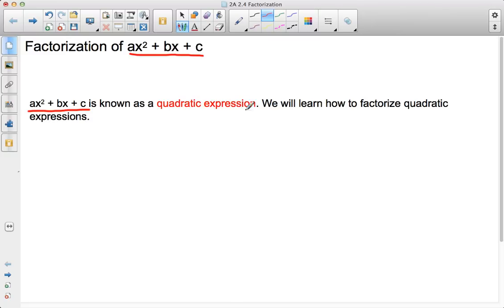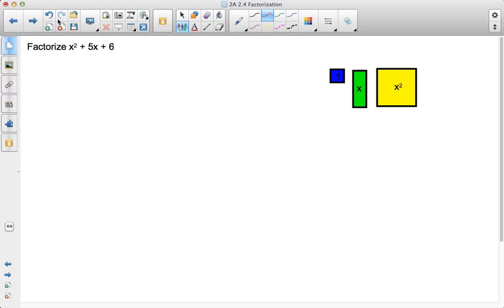So what we will do is talk about how to factorize quadratic expressions. Now in some books you might not see factorize, you might just see the word factor. Or instead of factorization, you'll see factoring. But in this book we have factorization. Anyway, let's take a look, for example, using algebra tiles at what x² + 5x + 6 looks like.